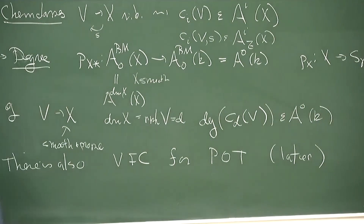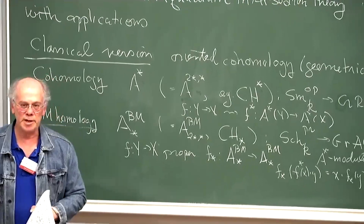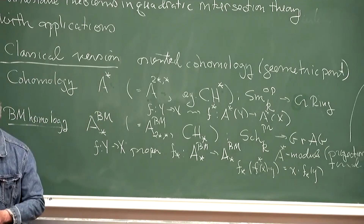How do you get these theories? They come from a commutative ring spectrum object in SH(K), the stable motivic homotopy category, and you get the cohomology and Borel-Moore homology by six-functor formalism. We're not going to be using that, but that's just how you generate these things.